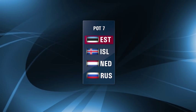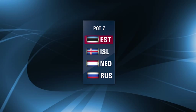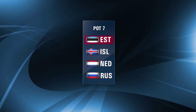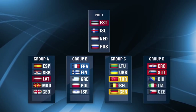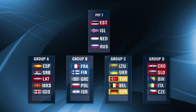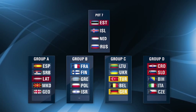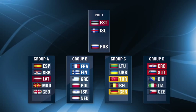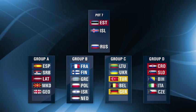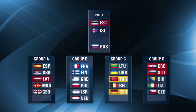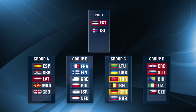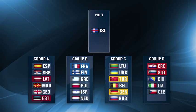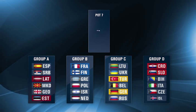For Pot 7, there are four countries and they'll be drawn as normal with Estonia as a partner country going to the group with Latvia. For example, the Netherlands are drawn first and have to go to Group B as Estonia will be in Group A. Russia are drawn next and go to Group C, Estonia is then drawn and goes to Group A, and finally Iceland are drawn in Group D.